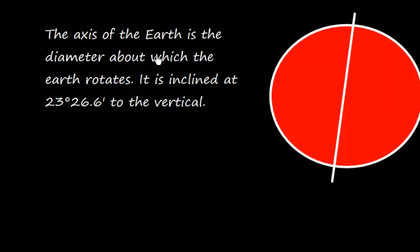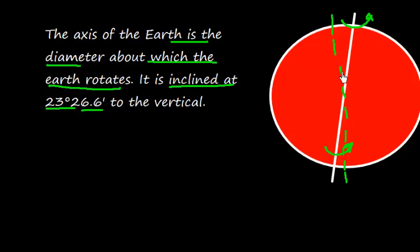The axis of the Earth is the diameter about which the Earth rotates. If the Earth rotates like this, this is the axis and this is the diameter about which the Earth rotates, and it is inclined at 23 degrees 26.6 minutes to the vertical.